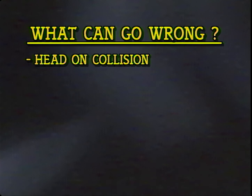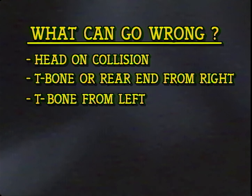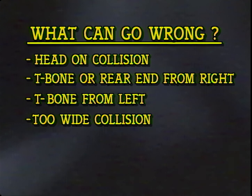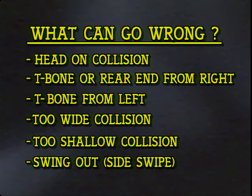Plenty! You could have a head-on collision with an oncoming vehicle. You could be T-boned or rear-ended by a vehicle coming from the right, or T-boned by a vehicle coming from the left. If you make too wide a turn, you could hit parked vehicles, bus stands, utility poles, etc., on the street you're turning onto. If you make too shallow a turn, you could have a head-on collision with an oncoming vehicle. If you misjudge your bus's tail swing, you could swing out and sideswipe a vehicle in the right-hand lane.